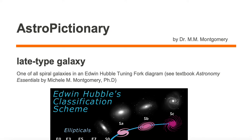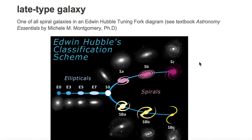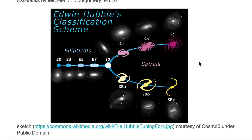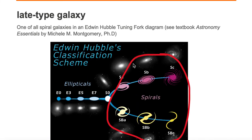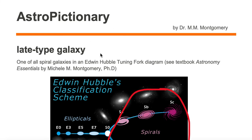A late-type galaxy is all spiral galaxies in an Edwin Hubble Tuning Fork diagram. Here we have a sketch of Edwin Hubble's galaxy classification scheme. All the spirals are located on the right. Any one of the spirals on the right is known as a late-type galaxy.